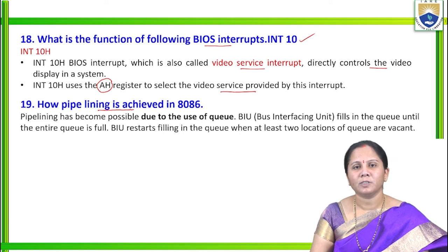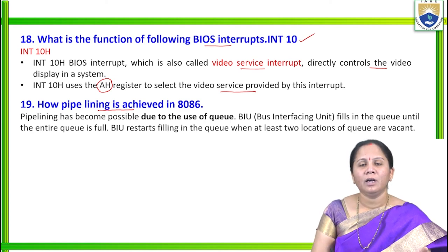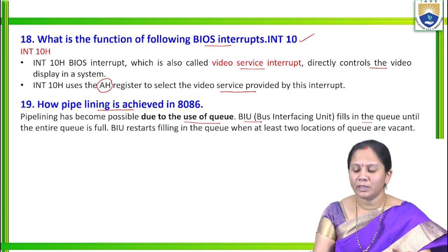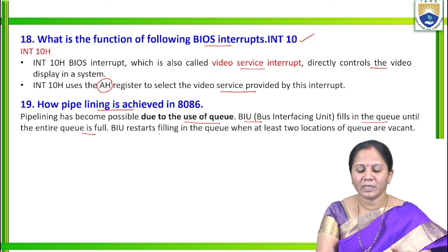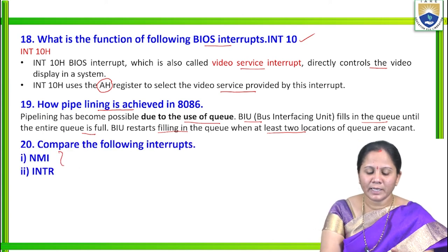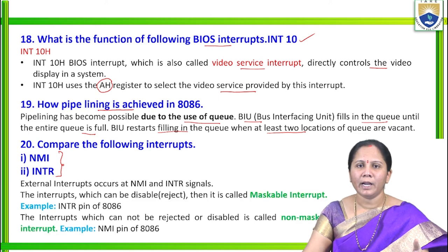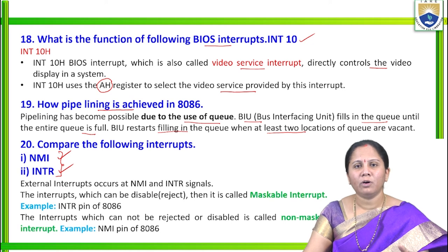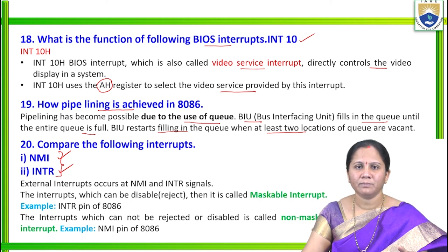How pipelining is achieved in 8086: the architecture has two units — BIU (bus interface unit) and EU (execution unit). Pipelining is possible due to the queue in the BIU; it fills the queue until full, and restarts filling when at least two instructions of the queue are vacant. Finally, comparing NMI and INTR: NMI is non-maskable interrupt — cannot be disabled, irrespective of interrupt flag bit. INTR is the maskable interrupt (interrupt request) — can be disabled and is dependent on the interrupt flag bit.